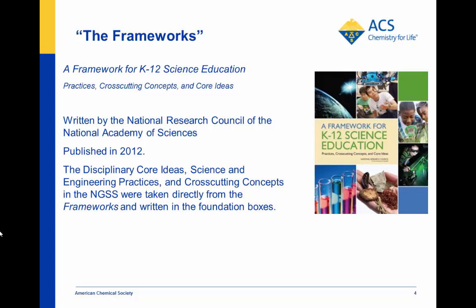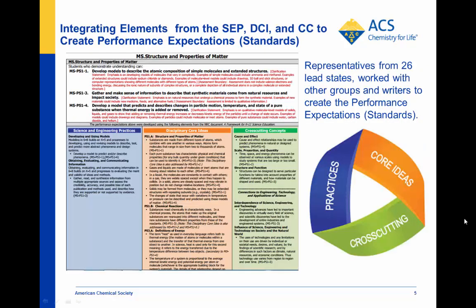So how did the framework become the standards? The framework itself directed that the standards be written as learning goals or performance expectations that integrate elements from each of the dimensions — the disciplinary core ideas, the science and engineering practices, and the cross-cutting concepts. Here's an example. Take a look at MSPS 1-4: 'Develop a model that predicts and describes changes in particle motion, temperature, and state of a pure substance when thermal energy is added or removed.' How did the writers come up with that?